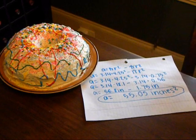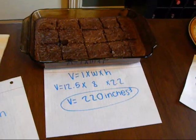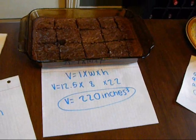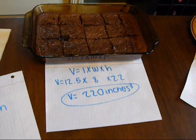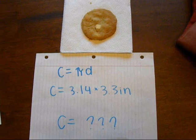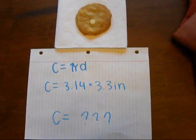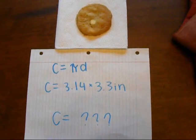The area of our cake is 55.5 inches squared. The brownies are congruent, and the volume is 220 inches cubed. The diameter of the cookie is 3.3 inches — now we want you to go find the circumference. Thanks for watching our cooking show. We're about to pass out cookies for y'all to eat. We hope you enjoy. Bye!